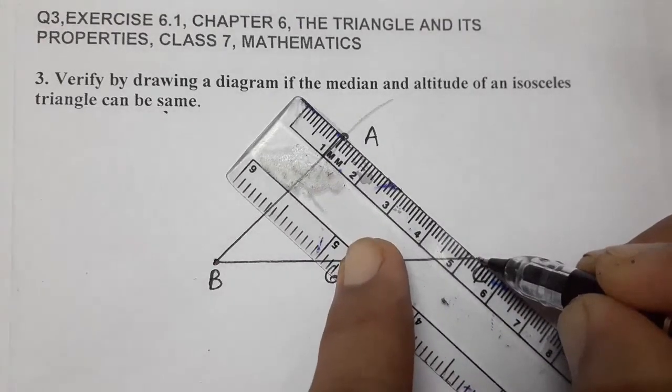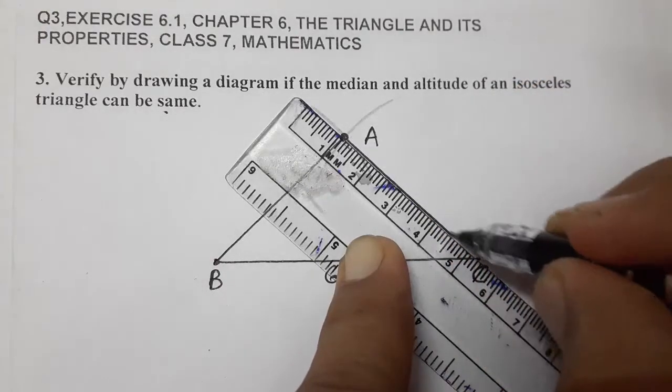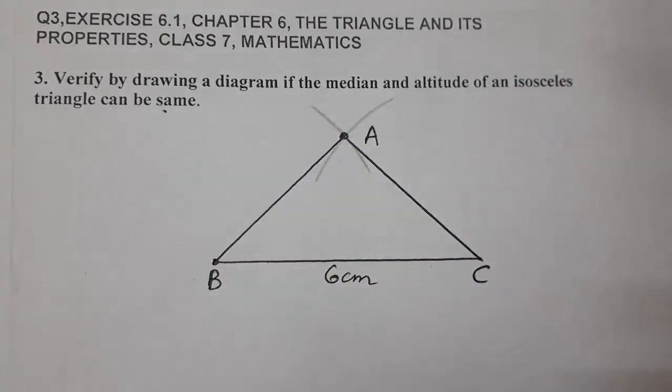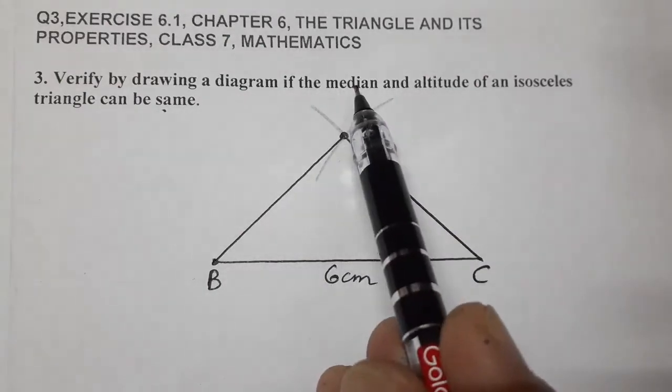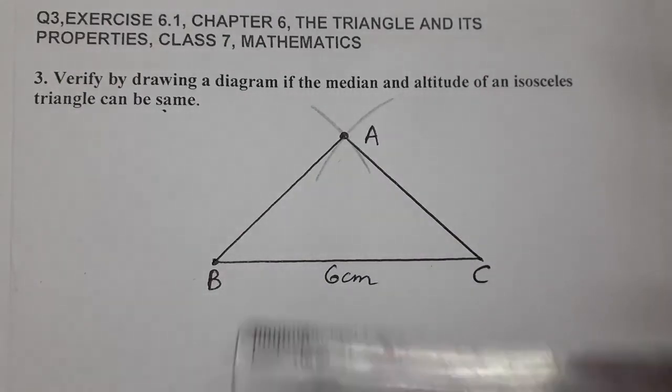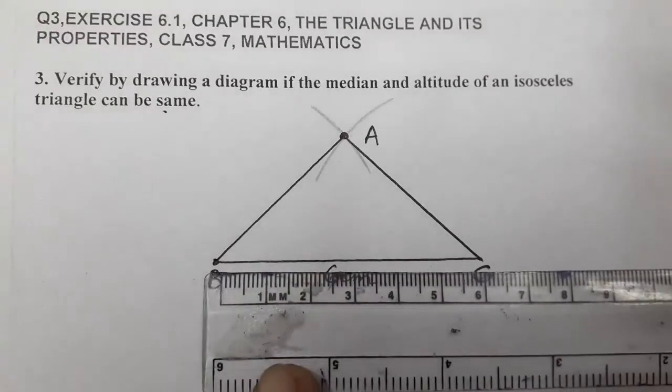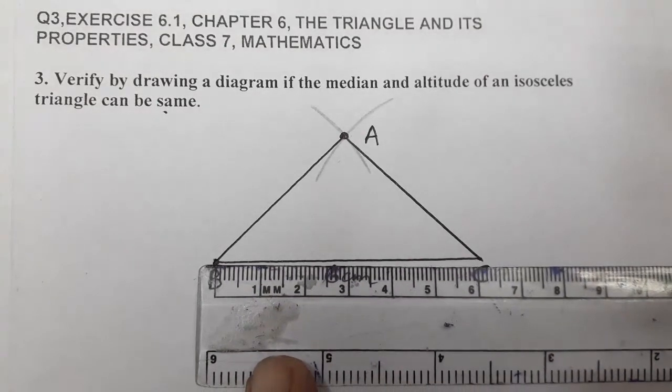This is AC. Now what is the question? If the median and altitude... First let's make the median. What is the median? Median is a line segment joining the vertex to the opposite side midpoint.